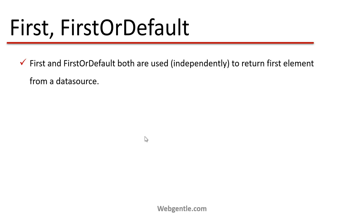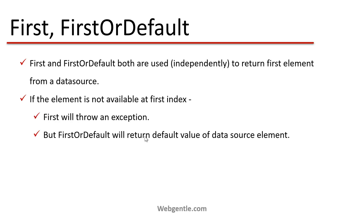The key difference between First and FirstOrDefault is what happens when no element is available. Suppose you have a data source and there is no element at the first position — this can happen because of a filter condition that returns no results. In that case, the First method will throw an exception, while FirstOrDefault will return the default value of the data source element type.